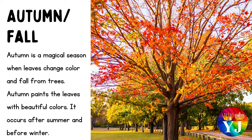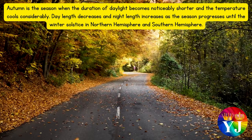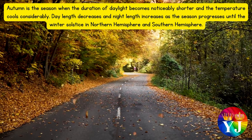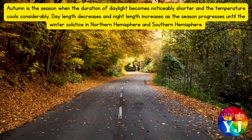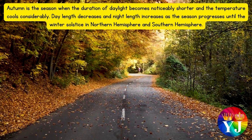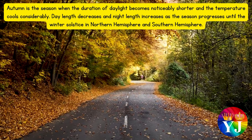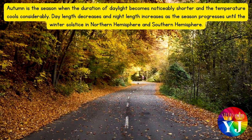Autumn is a magical season when leaves change color and fall from trees. Autumn paints the leaves with beautiful colors. It occurs after summer and before winter. Autumn is the season when the duration of daylight becomes noticeably shorter and the temperature cools considerably. Day length decreases and night length increases as the season progresses until winter.